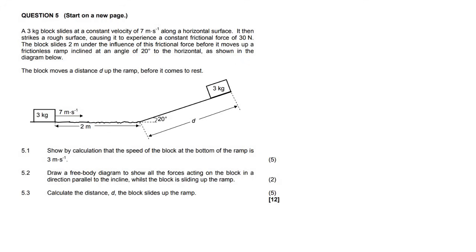In this question, we have a 3 kilogram block sliding at a constant velocity of 7 meters per second along a horizontal surface. Then it hits this 2 meter section, which is rough, meaning there's friction, and it experiences a frictional force of 30 newtons. So the friction along this section is 30 newtons, and then eventually it's going to reach the slope.